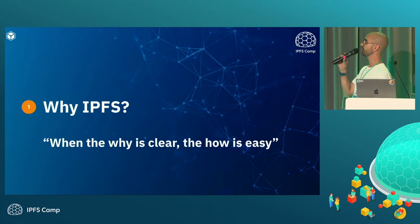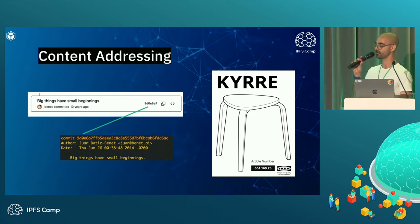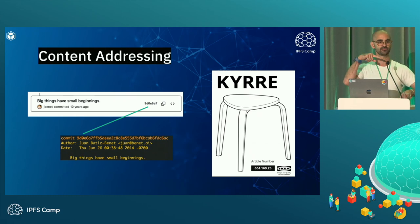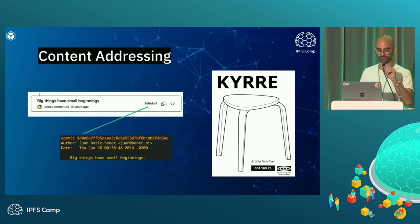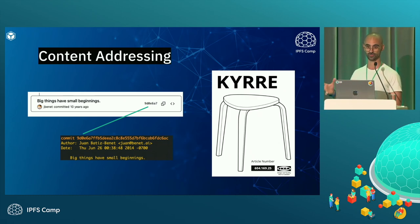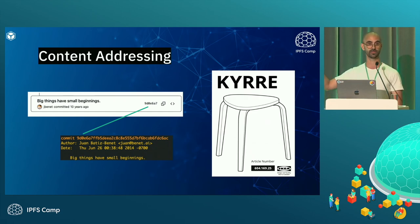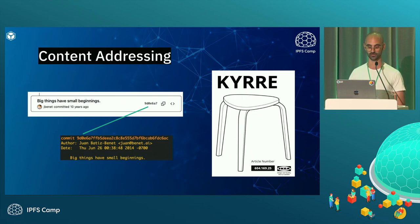So why IPFS? When the why is clear, the how becomes a lot easier. At its core, IPFS is all about content addressing — the idea that you address data based on its contents using hashes. IPFS is not the first content-addressed system; we have Git, which has been around for a long time. As a content-addressed system, it enabled a lot of innovation — collaboration tools like GitHub, GitLab, and even things like Radicle, built on top of Git as a decentralized coordination mechanism.